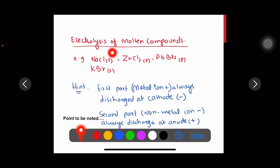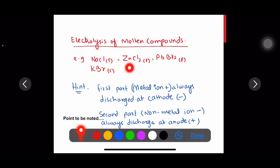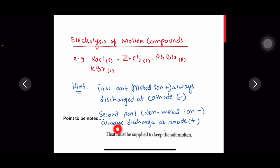For electrolysis of molten compounds — for example sodium chloride, zinc chloride, lead bromide, potassium bromide — the letter 'l' represents the molten or liquid form. An ionic compound has two parts: the first part is the metal, which always discharges at the cathode; the second part is the non-metal, which is always discharged at the anode, because of opposite attraction.